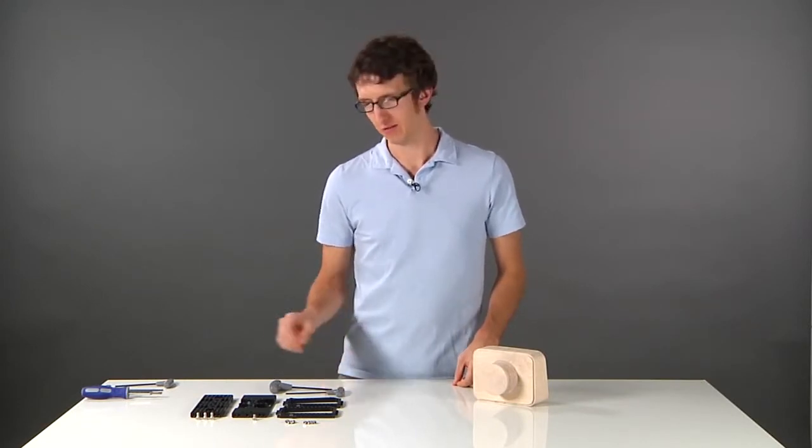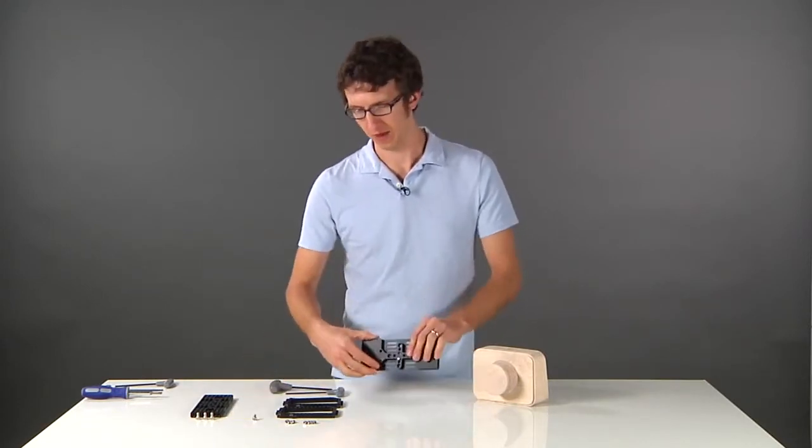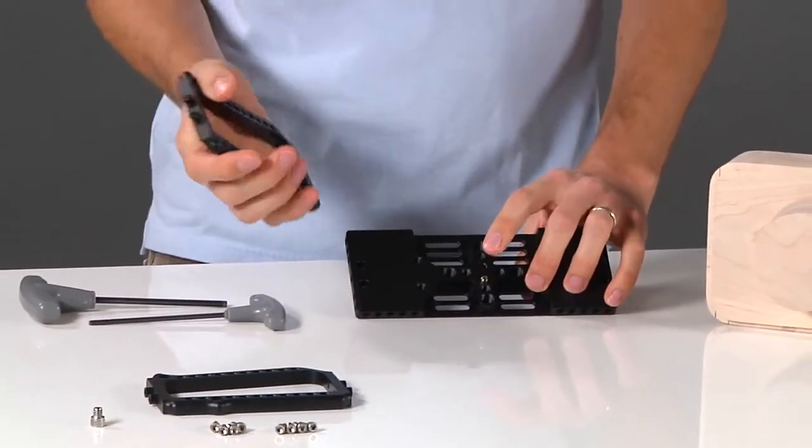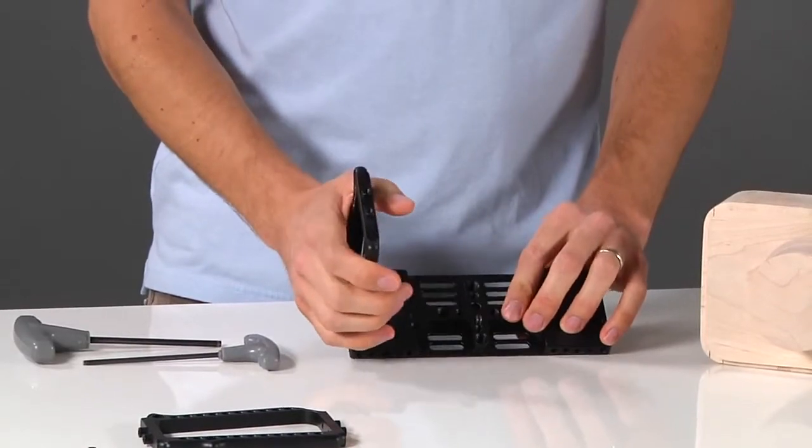In this video we're going to show you how to install your camera cage BMC. First, take your base plate and one grip. You'll want to align the locating pin towards the front in relation to your hands.